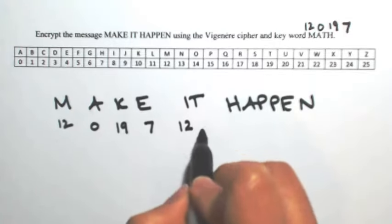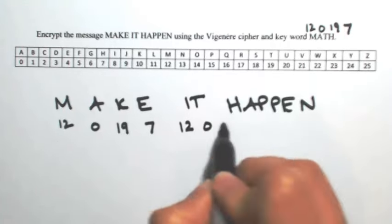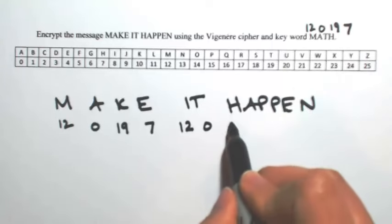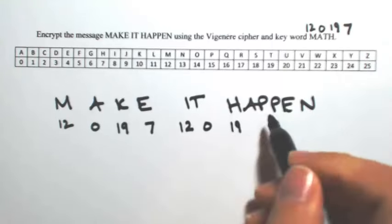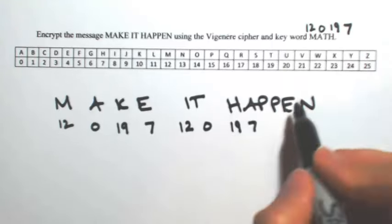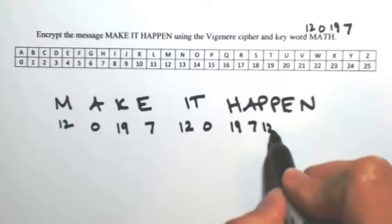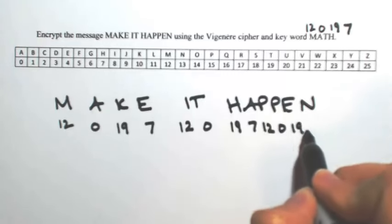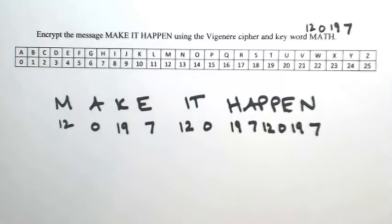Continuing the repeating pattern: 12, 0, 19, 7, then start again: 12, 0, 19, 7.